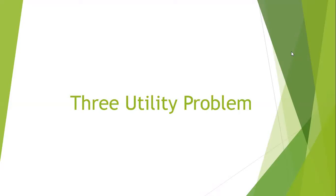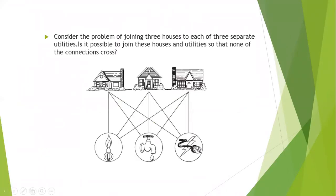Hello everyone, today we are going to discuss the three utilities problem, which gives an insight into planar graphs. This problem is defined by a story: there are three houses and three utilities — gas, water, and electricity. Each house has to be connected to all three utilities, and here you can see the three houses and three utilities, with connections represented by lines between them.